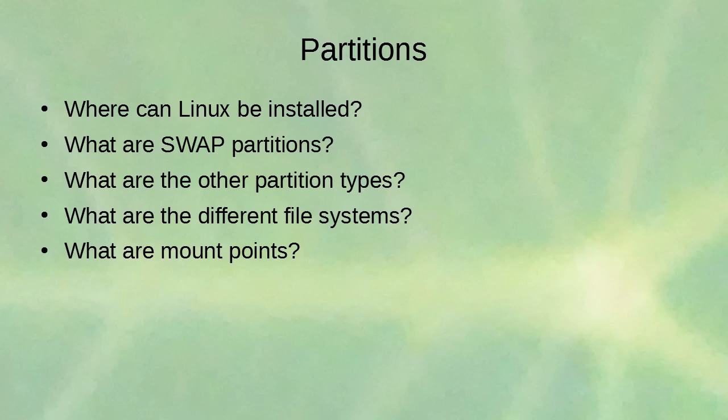A swap partition takes a portion of the hard drive and uses it as virtual memory. When you start running low on RAM, pieces of RAM that aren't being used get written to the hard drive. If you need those pieces again, they're pulled back from the hard drive into RAM and something else goes to the drive. If you do that constantly, it's called thrashing — very bad for your system because the hard drive is much slower than RAM.